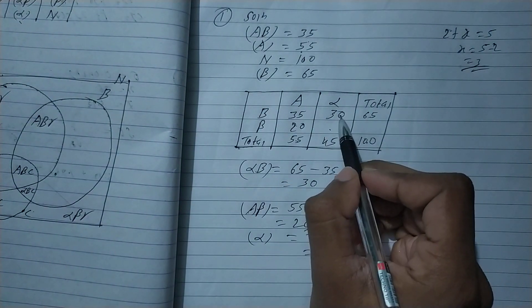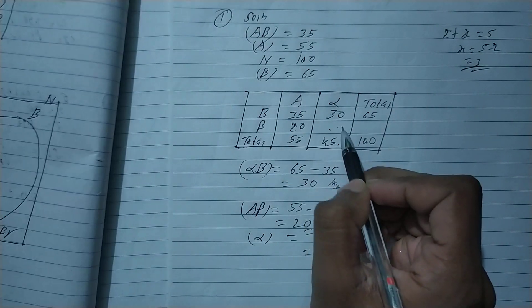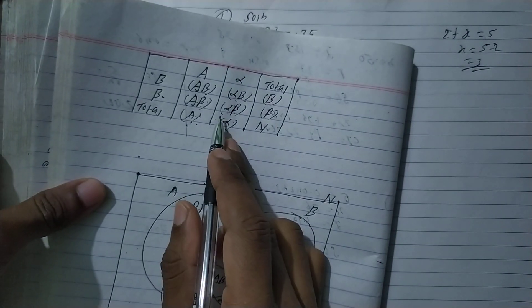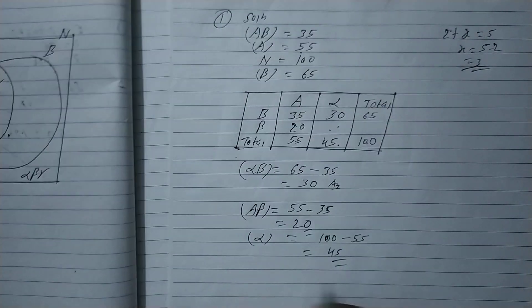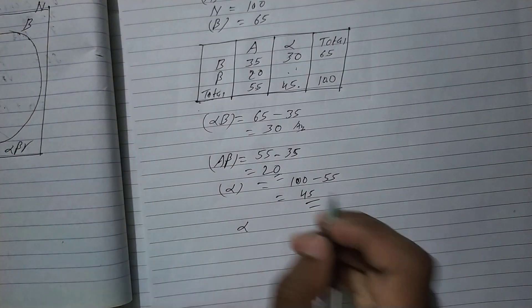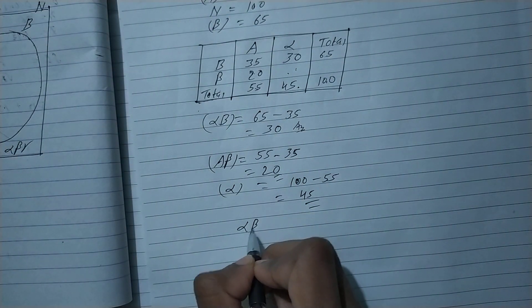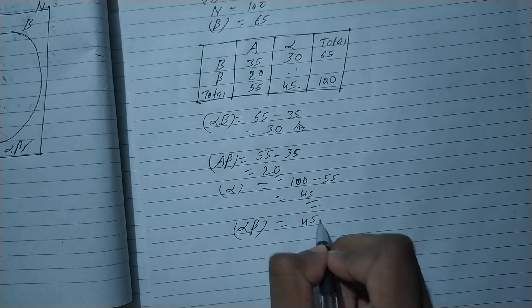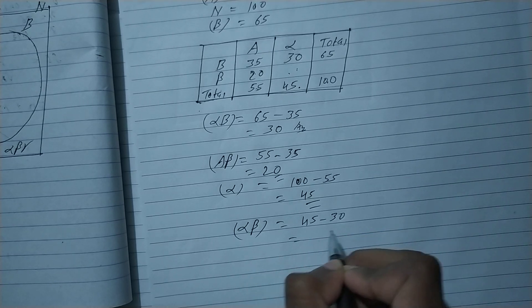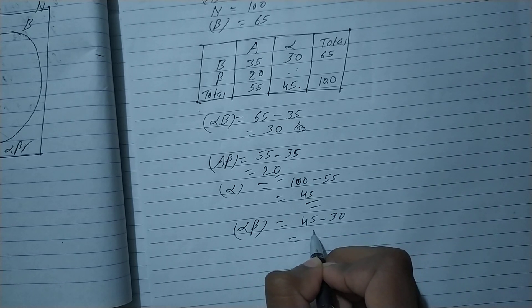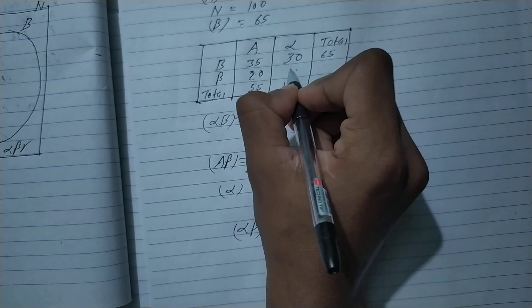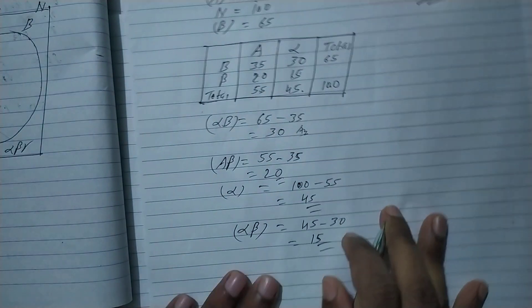Now alpha beta — how much is this? Alpha beta is 45 minus 30, which is 15. So the answer is 15.